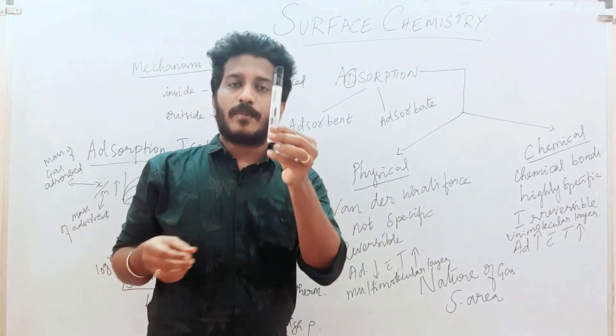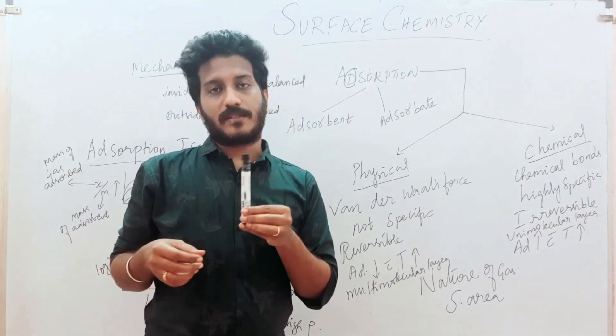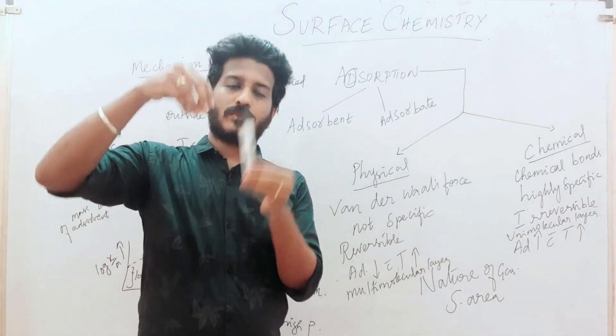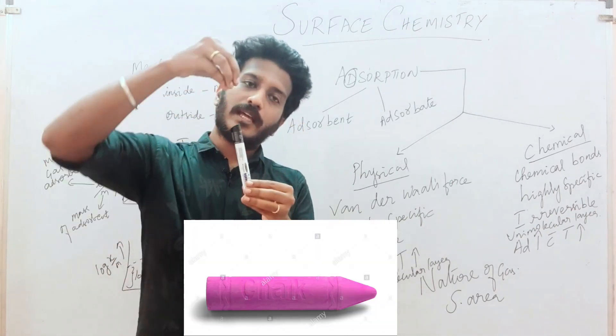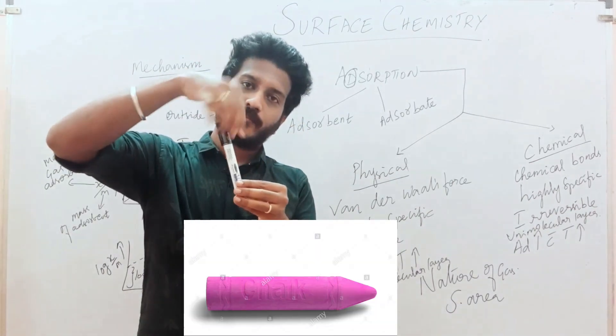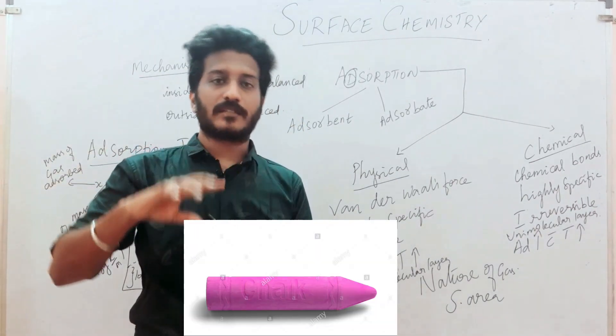Take one example — a chalk piece. That is an adsorbent. Now putting red ink — that is the adsorbate.